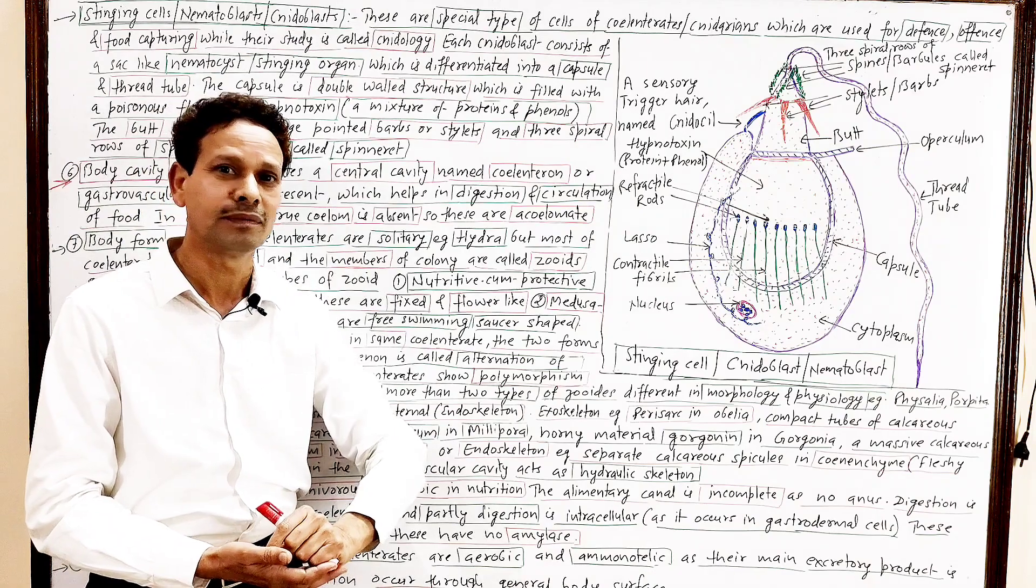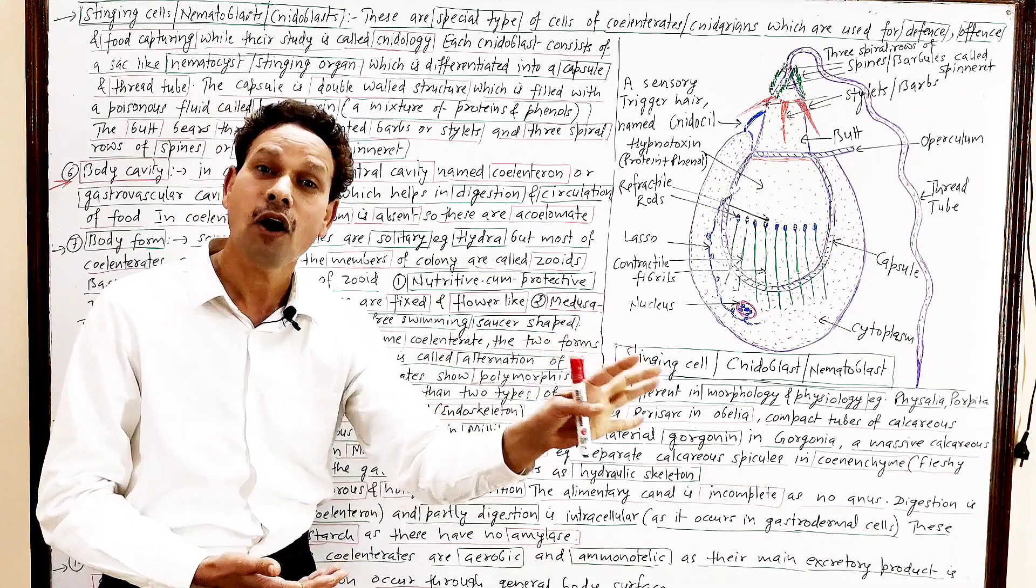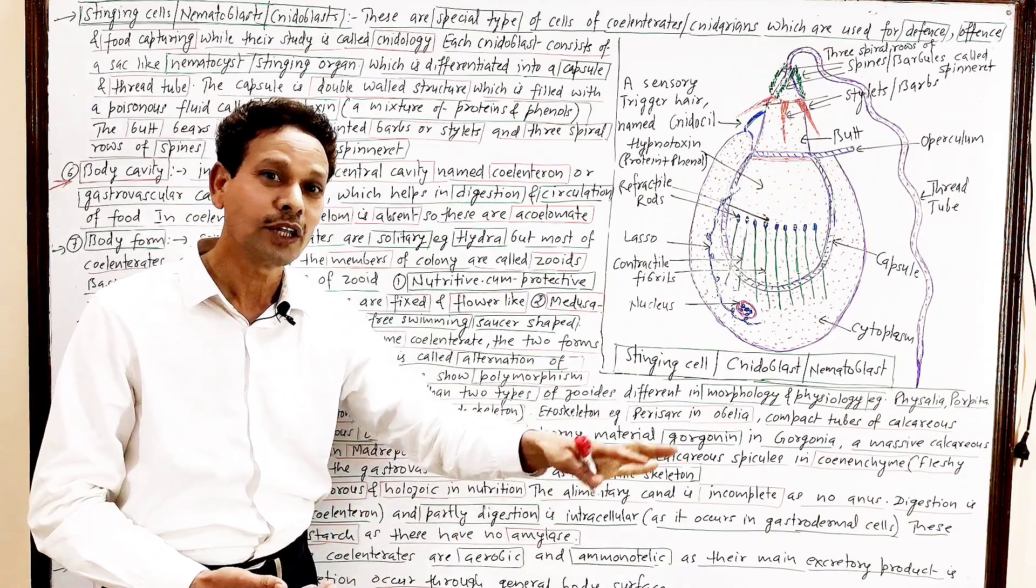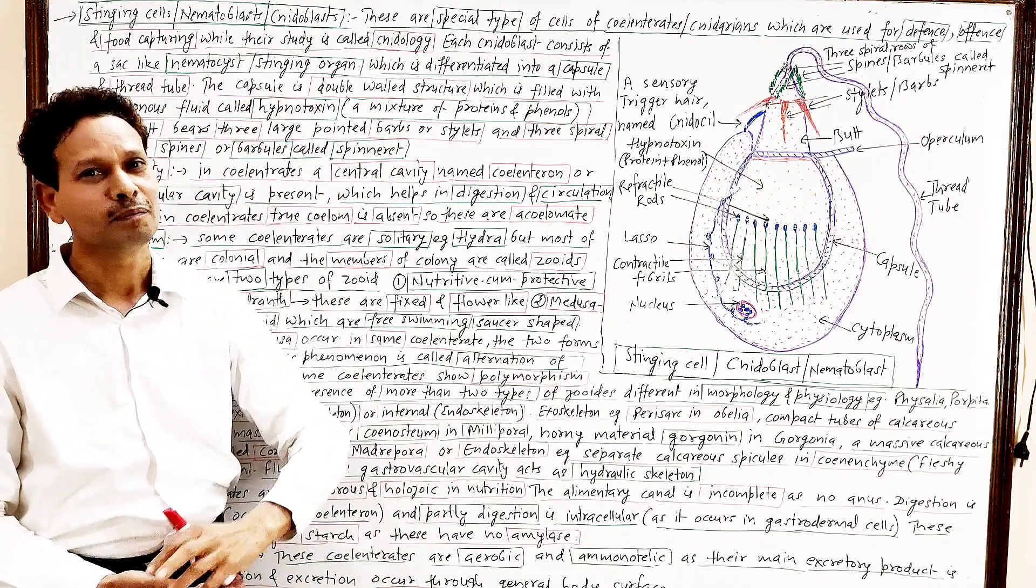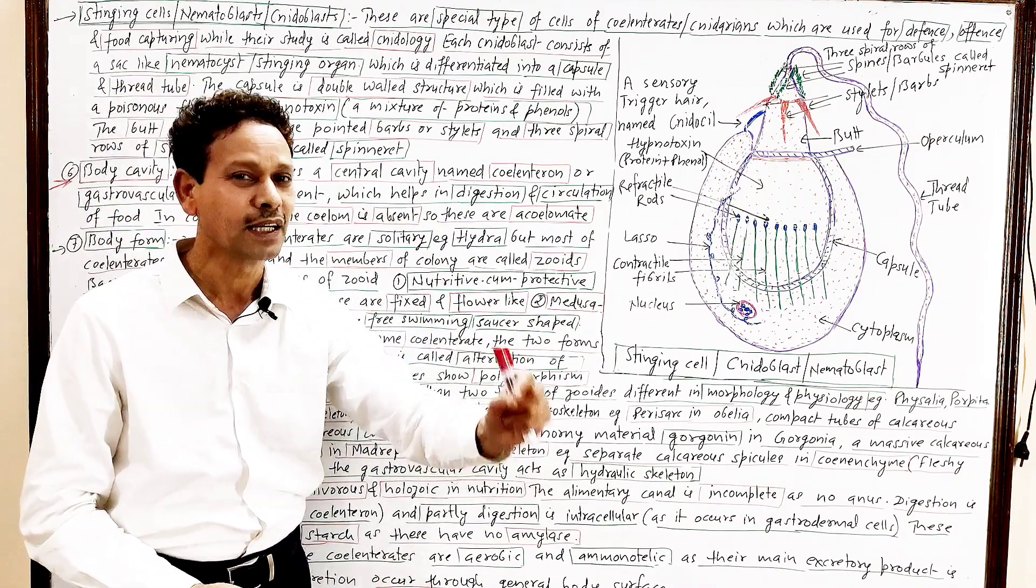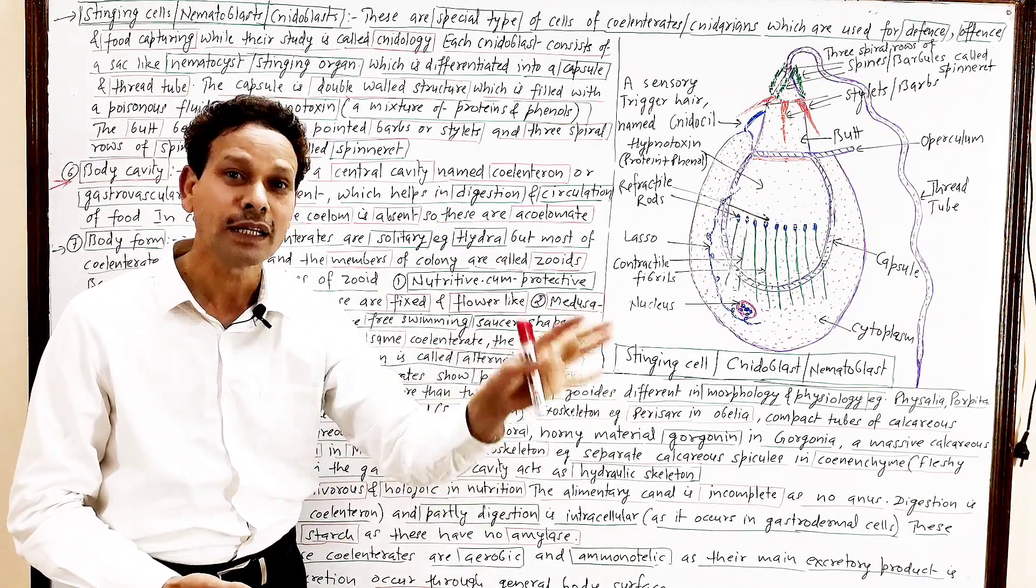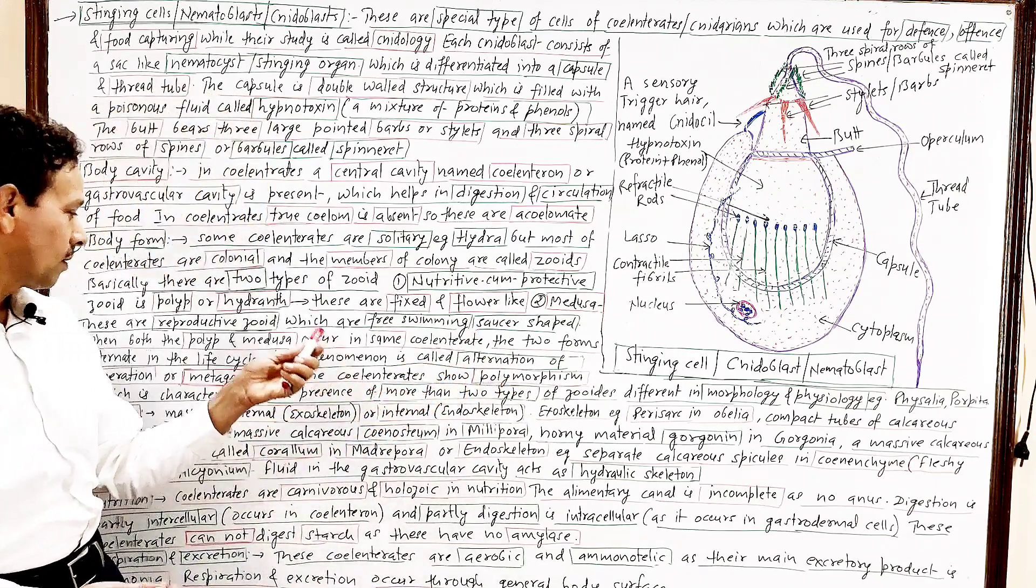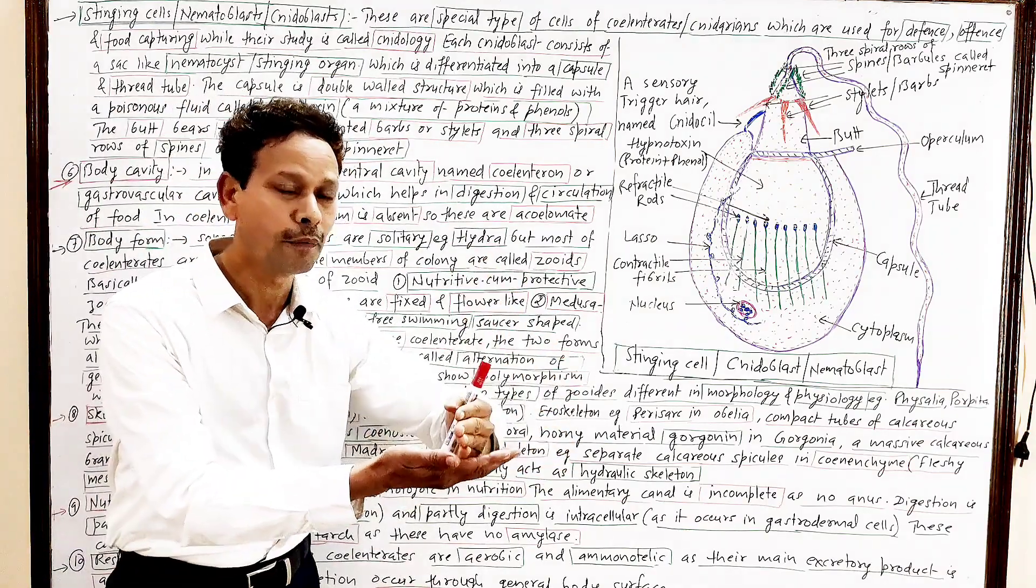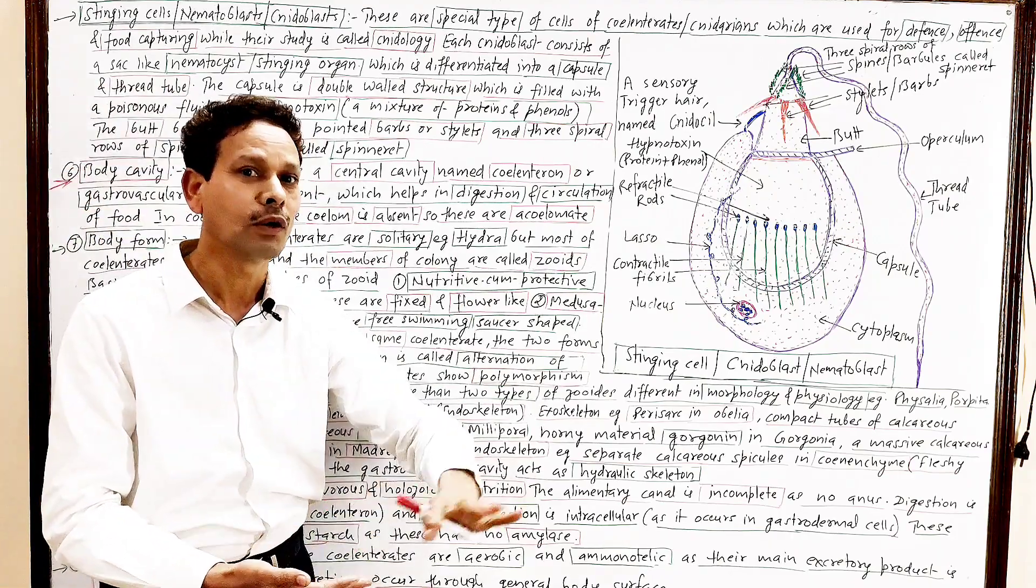Generally, in a colony, both these forms, they alternate with each other. In their life cycle, they alternate polyp and medusa. This phenomenon is named alternation of generation. Hence, this property of alternation of generation of polyp and medusa in their life cycle, that is metagenesis. Alternation of generation, one form polyp alternate with medusa, alternation of generation, metagenesis.